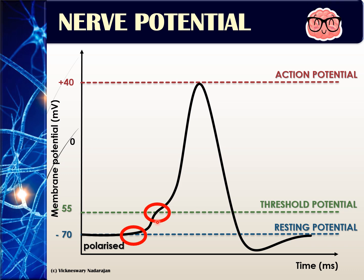At this stage, the nerve is getting ready to transmit an impulse, but it will only transmit if the potential becomes smaller than negative 55 — for example, negative 50. At that point the nerve starts to become positively charged; that process is called depolarization. It reaches a maximum of positive 40, that is the action potential, and at that stage the nerve transmits an impulse.